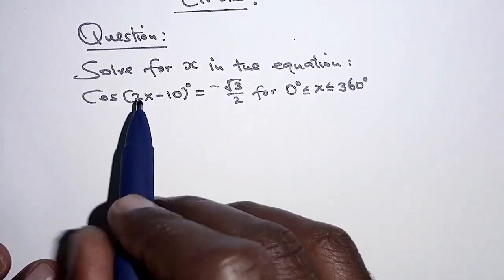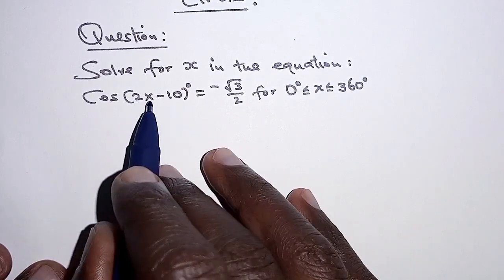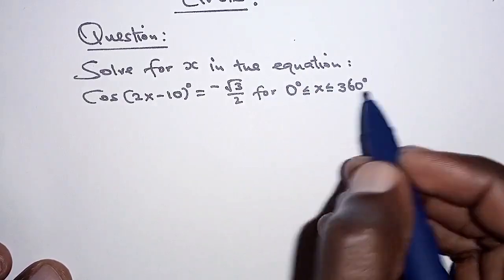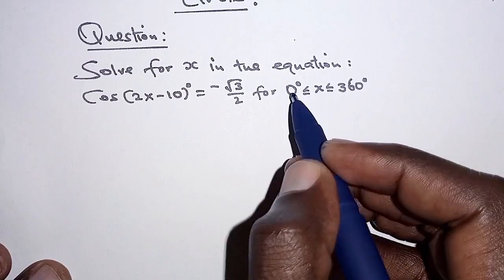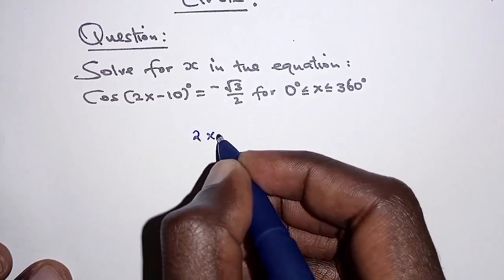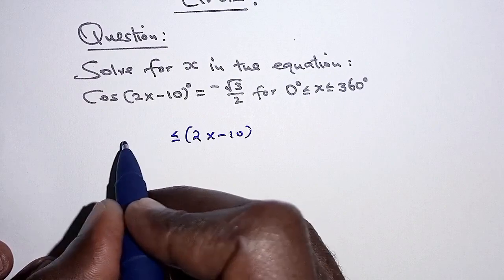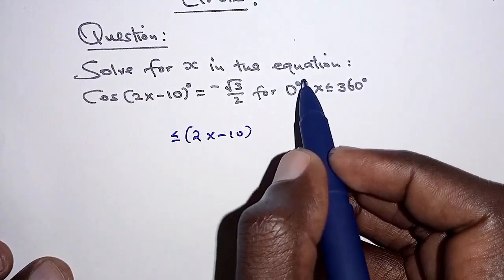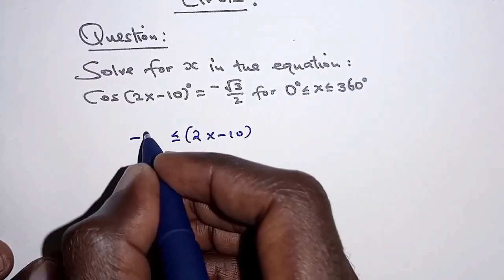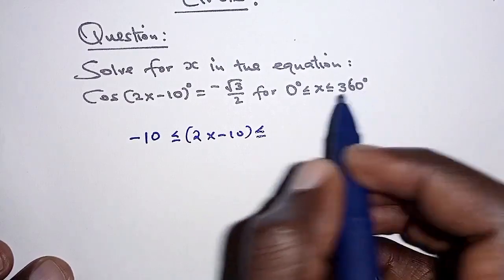So the first thing we are going to determine the range for this angle here, 2x minus 10. Using the range of x from 0 to 360 we can say 2x minus 10 ranges between, for this end we will substitute 0 in this expression and that will give us negative 10. And then we should go all the way up to,